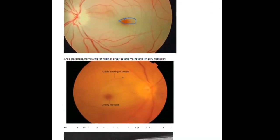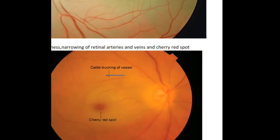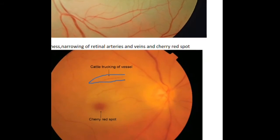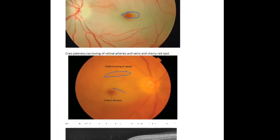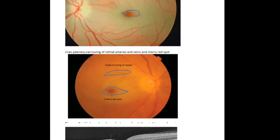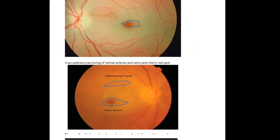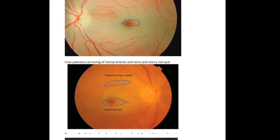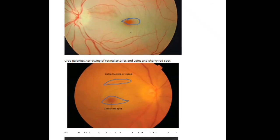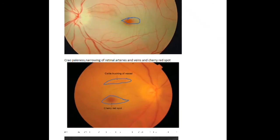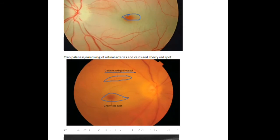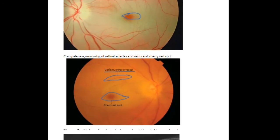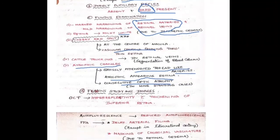In fundus images, cattle tracking of the vessels — especially retinal veins — due to segmentation is visible. The cherry red spot can also be seen at the center. The main typical features to note are: narrowing of both arteries and veins, cherry red spot at the center due to thinning of the retina, and cattle tracking of the retinal veins due to their segmentation.